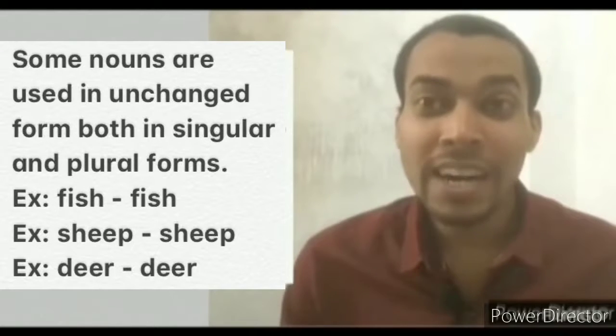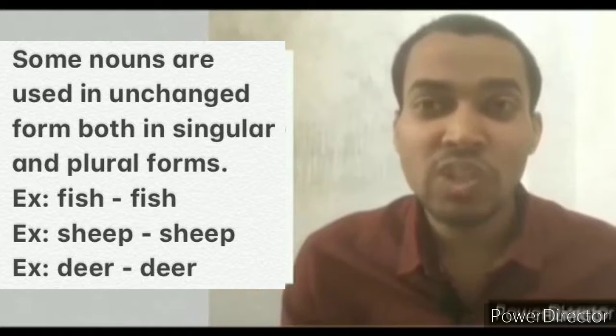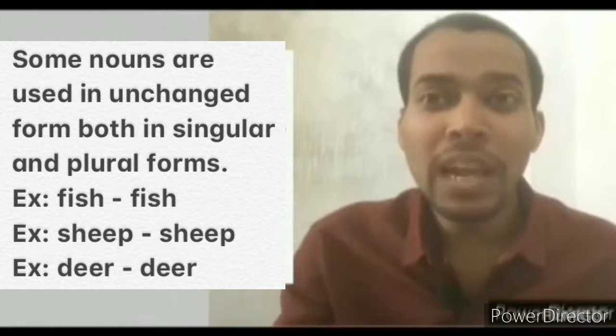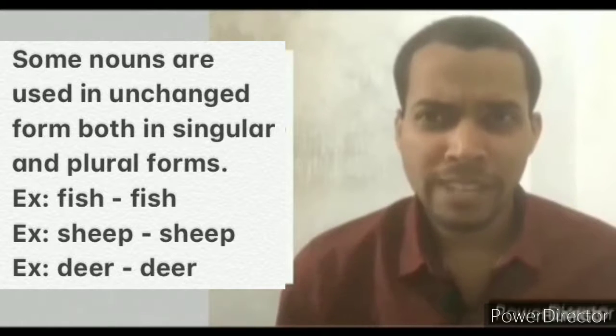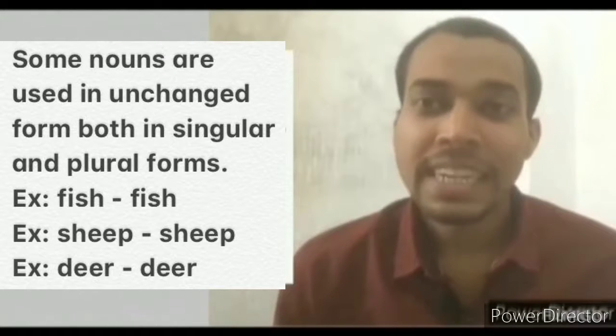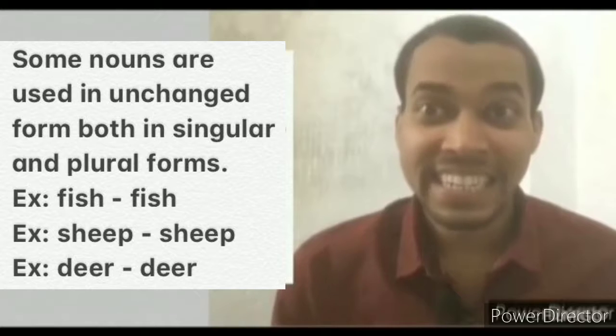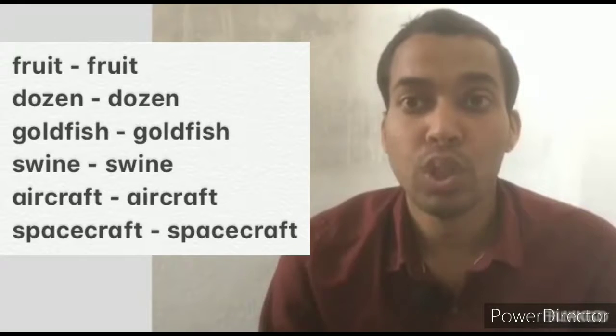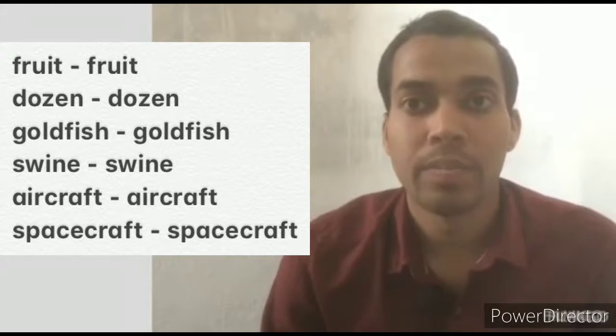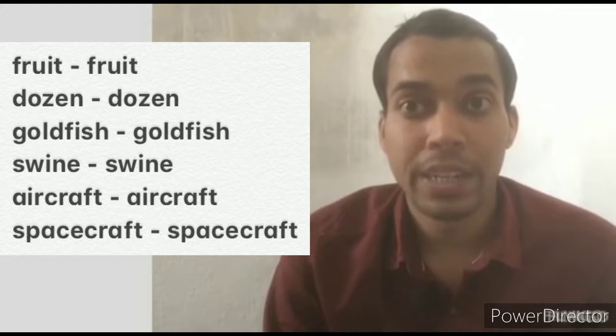Some nouns are used in unchanged form, both in singular and plural forms. For example, fish - fish, sheep - sheep, deer - deer, fruit - fruit, dozen - dozen, goldfish - goldfish, swine - swine, aircraft - aircraft, spacecraft - spacecraft.